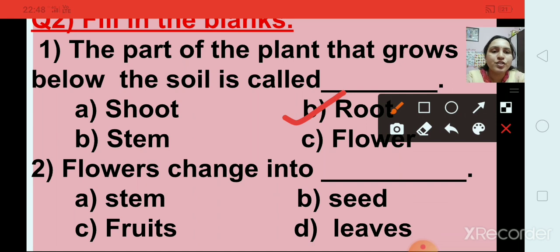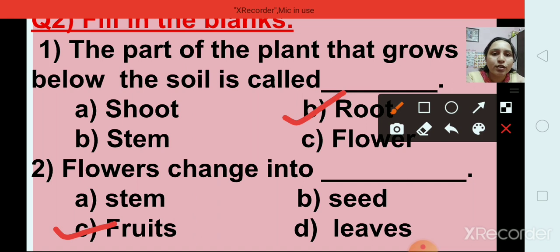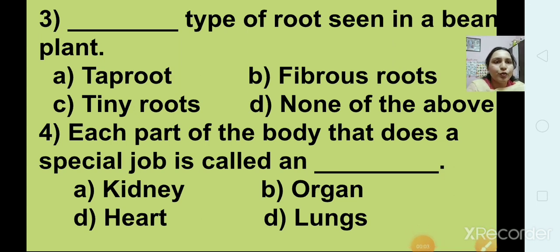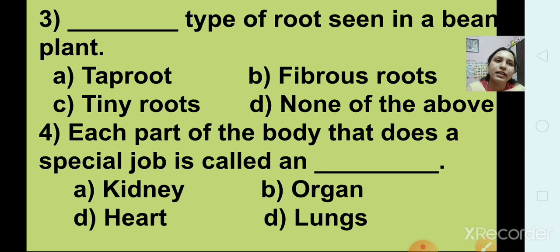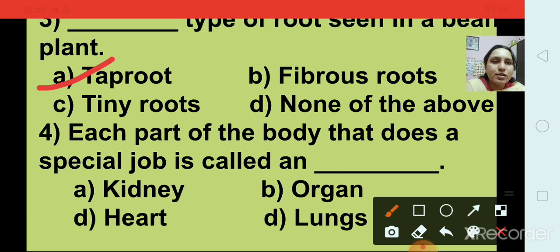Question number 2: Flowers change into — options are stem, seed, fruits, and leaves. Flowers change into fruits, option C. Question number 3: What type of root is seen in a bean plant? Options are tap root, fibrous roots, tiny roots, and none of the above. The right answer is tap root, option A.